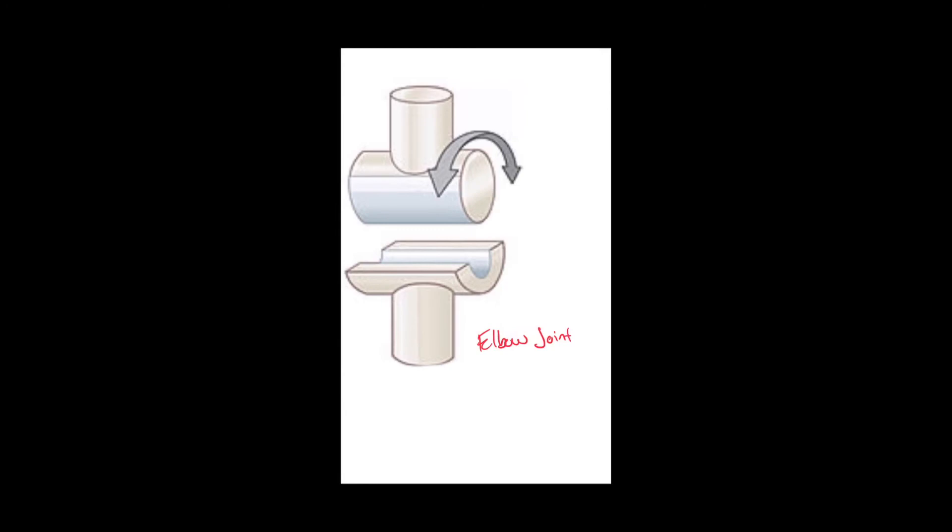An elbow joint can't rotate. It can't shift left or right. All it can do is flex and extend, and that is an example of a hinge joint.